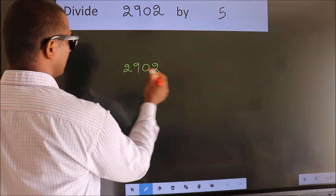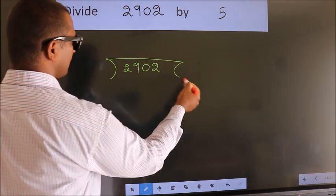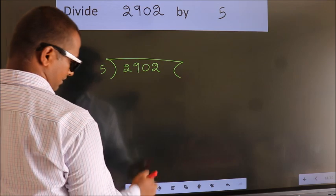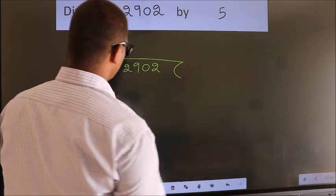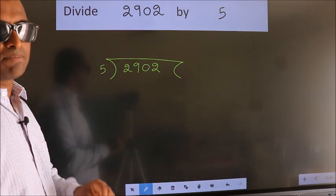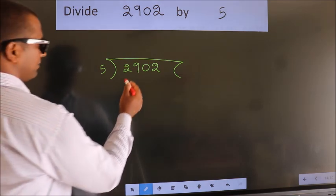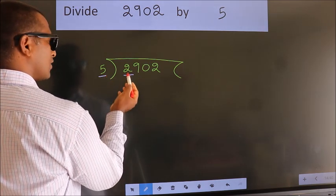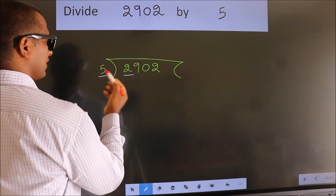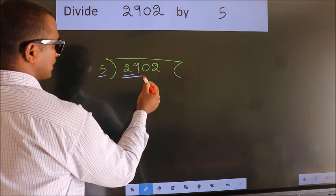2902 here, 5 here. This is your step 1. Next, here we have 2. Here 5. 2 is smaller than 5, so we should take 2 numbers.